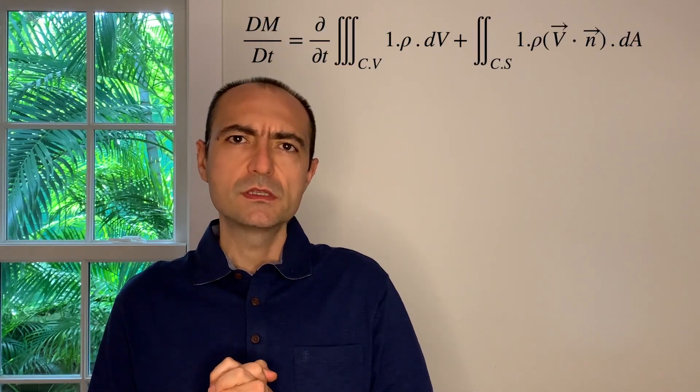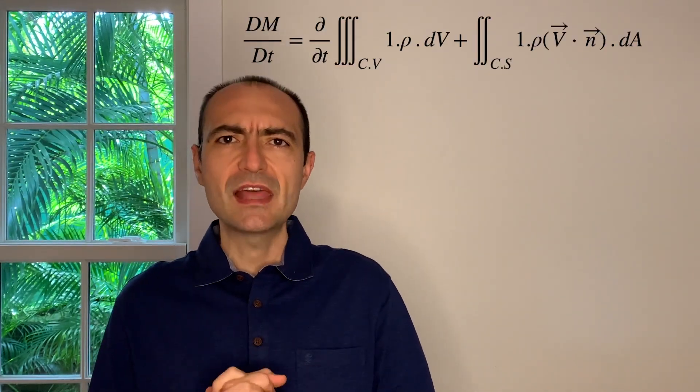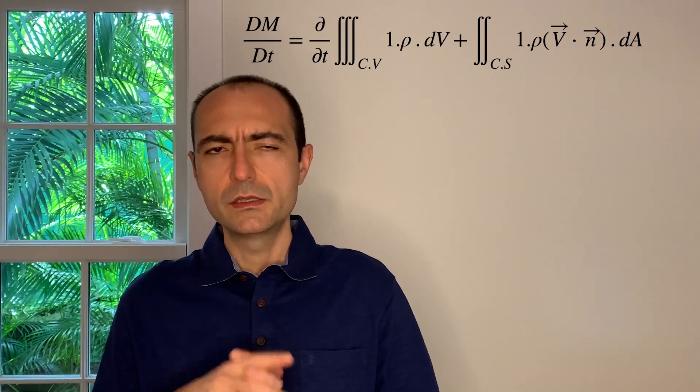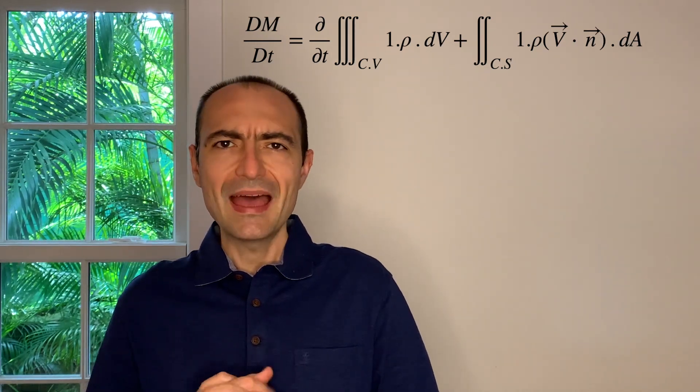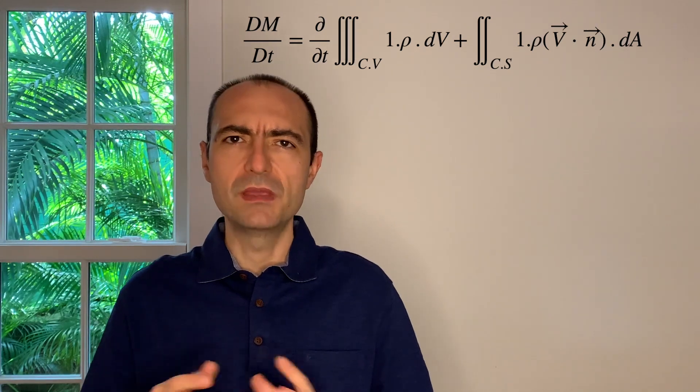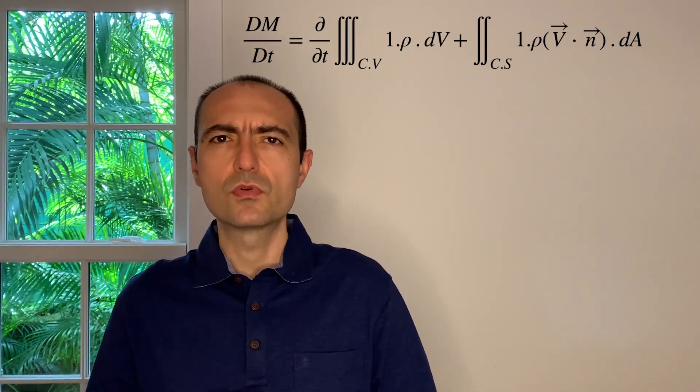And then what I obtained is, as the lowercase b, which is the intensive property, is equal to capital B divided by mass, I get myself a 1 for lowercase b, which is the intensive property.